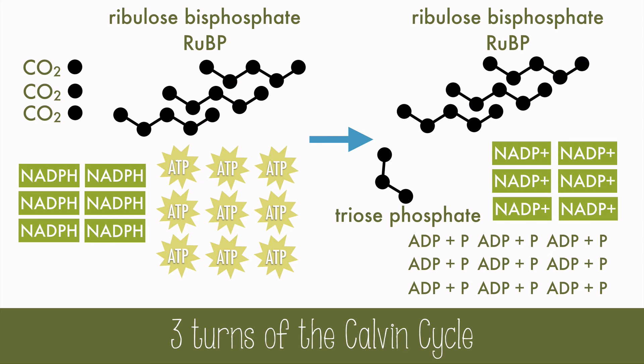This means three turns of the Calvin cycle make one triose-phosphate to be used by the cell, and three RuBP are recycled. It uses 6 NADPH and 9 ATP to form the triose-phosphate and reform the RuBP. To make a hexose sugar like glucose, six turns of the Calvin cycle will be needed to make the six-carbon sugar.